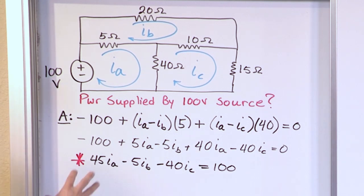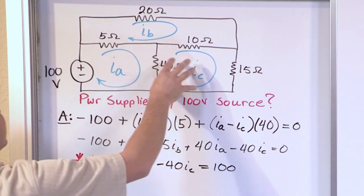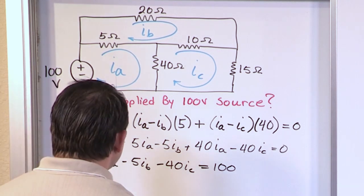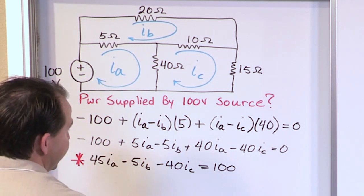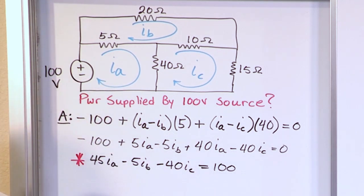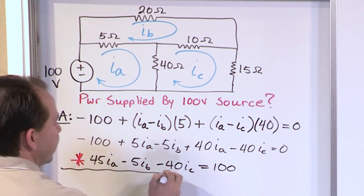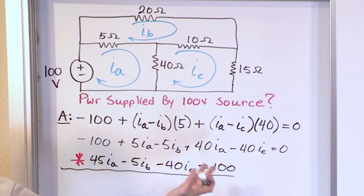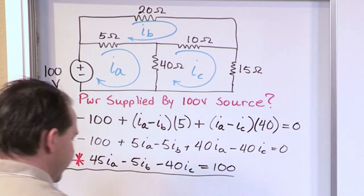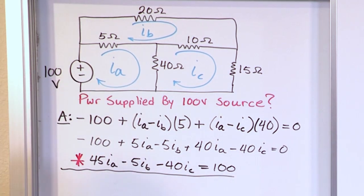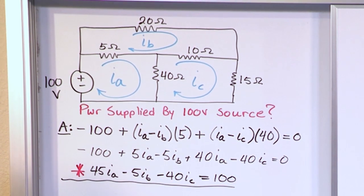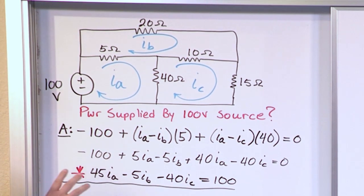We know from the circuit that we have three meshes, so we're going to require three equations. The mesh current method is a little simpler than node voltage in my opinion — there are fewer things to manipulate, it's just distributing and collecting terms. Now let's do mesh B.